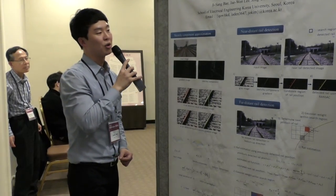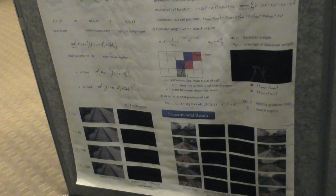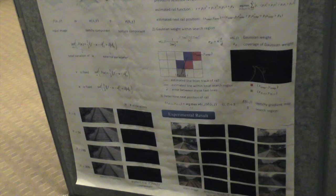The proposed rail detection algorithm has two steps. First, we find the rails in the near distance region by using the sketch component gradient and finding the point with maximum gradient magnitude, then we estimate the rails using the RANSAC algorithm applied to these candidate points. For the far distance region, we use the function of the previously detected lane.